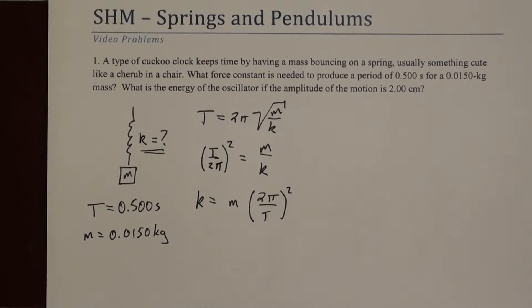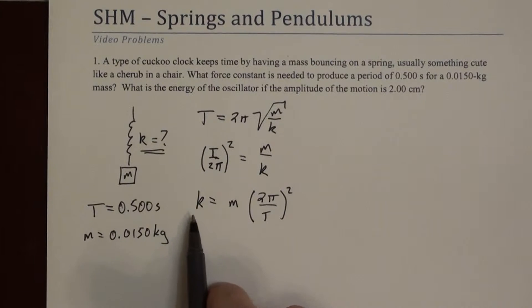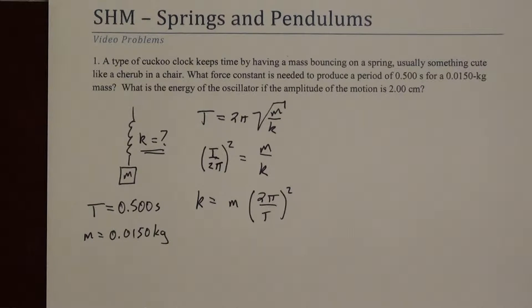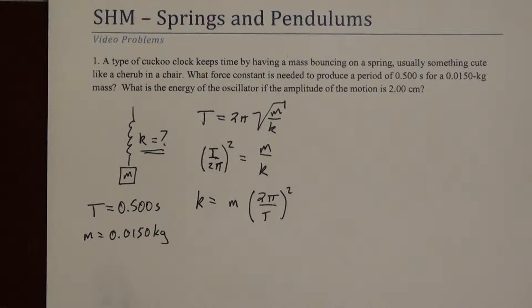We can check that this makes sense unit-wise. Here we have kilograms and per second squared. You might say a spring constant is newtons per meter — but remember that a newton is a kilogram·meter per second squared. So a newton per meter, taking out the meter, is just kilograms per second squared, which is exactly what this is.